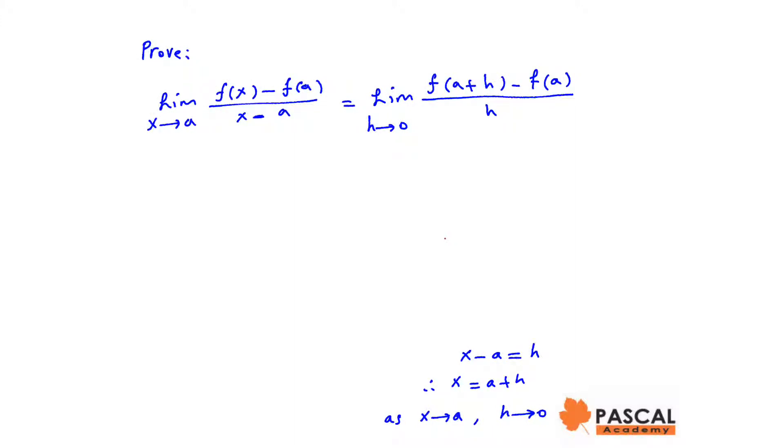Therefore, limit of f of x minus f of a over x minus a as x approaches a is the same as limit of f of a plus h minus f of a over a plus h minus a as h approaches 0, which is the same as limit of f of a plus h minus f of a over h as h approaches 0.